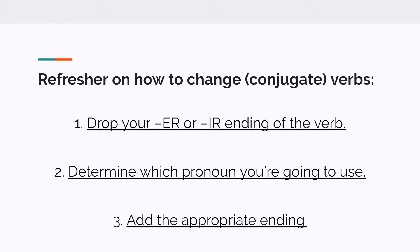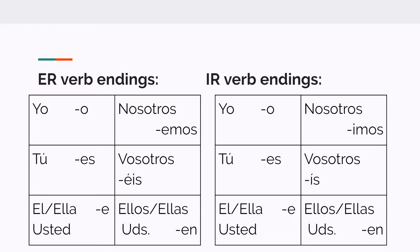Refresher on how to change or conjugate your verbs. Step one: drop your ER or IR ending of the verb. Step two: determine which pronoun you're going to use. Step three: add the appropriate ending. On the left-hand side you have your ER verb endings: -o, -es, -e, -emos, -es, -en.